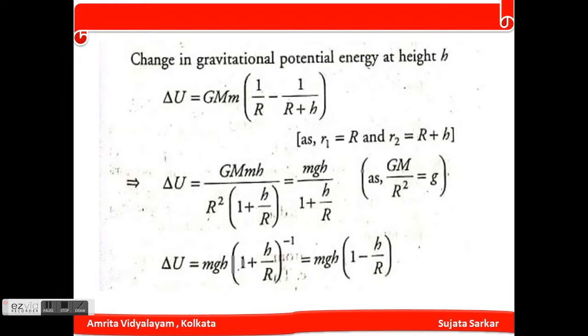So the gravitational potential energy at height h, we can write delta U equals GMm times 1 by R minus 1 by R plus h, because here h is the height, r1 equals capital R, and r2 equals R plus h.